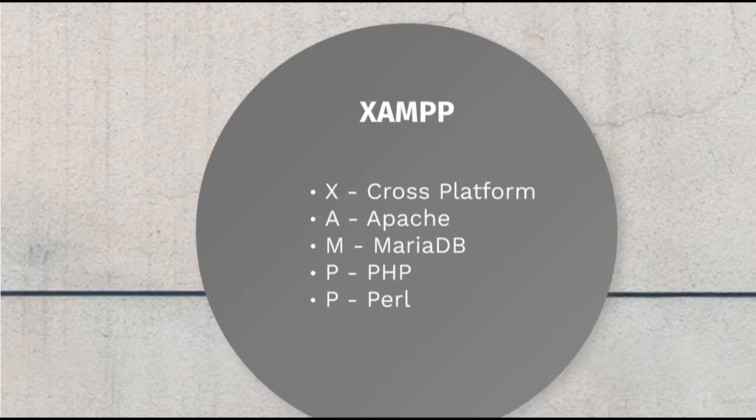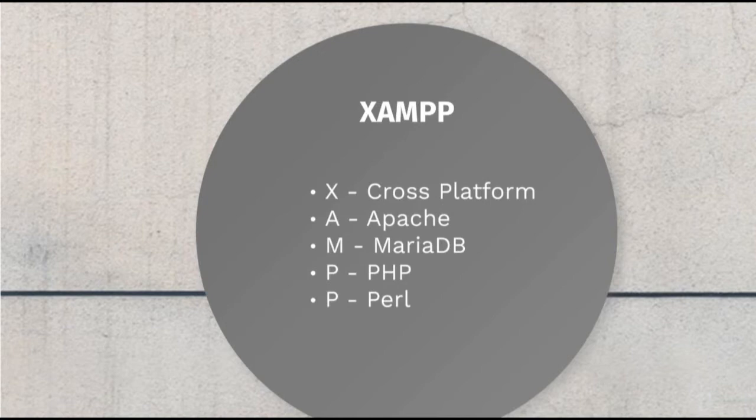The other letters in XAMPP: A stands for Apache, M stands for MariaDB, P stands for PHP, and the last P stands for Perl. XAMPP allows web developers to create a local web server for testing and development purposes before uploading their application to a remote web server. So let's go ahead and install XAMPP.